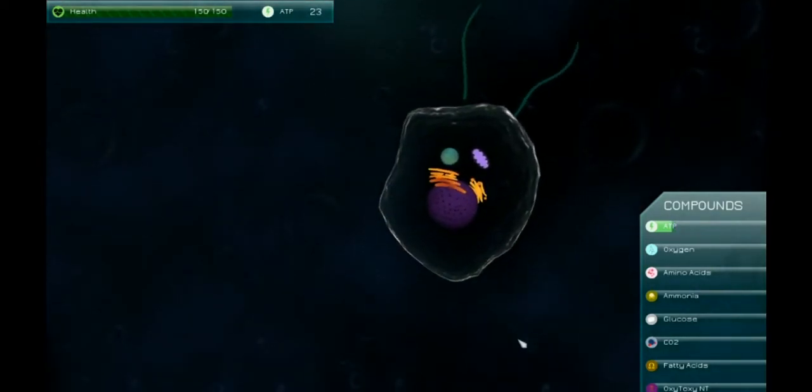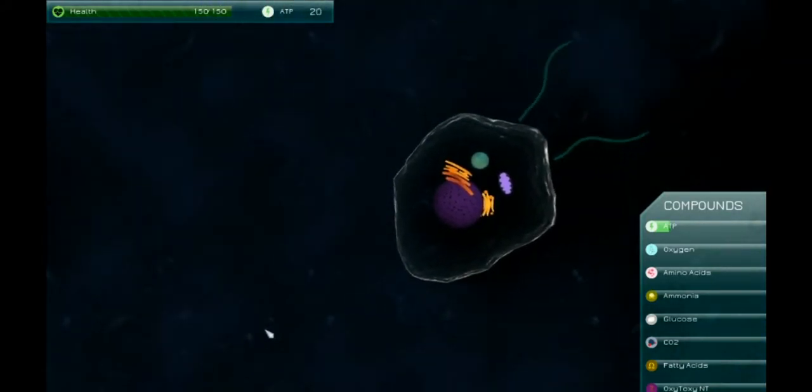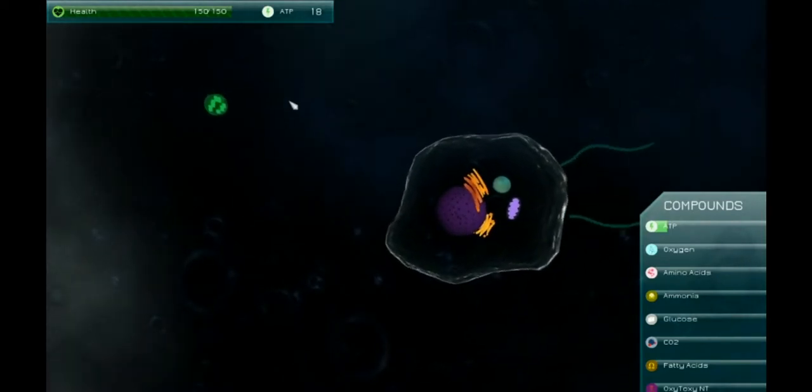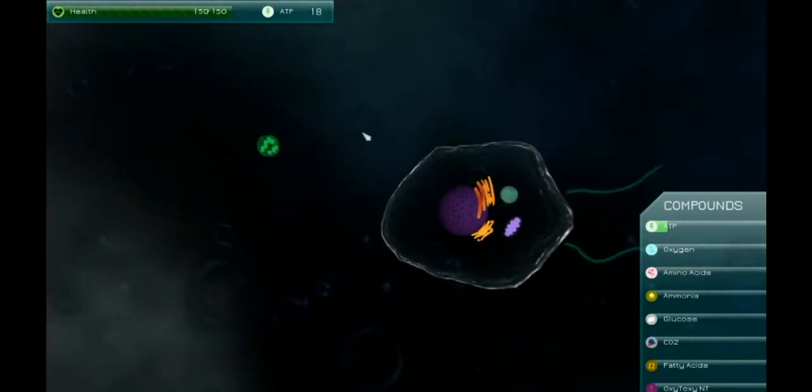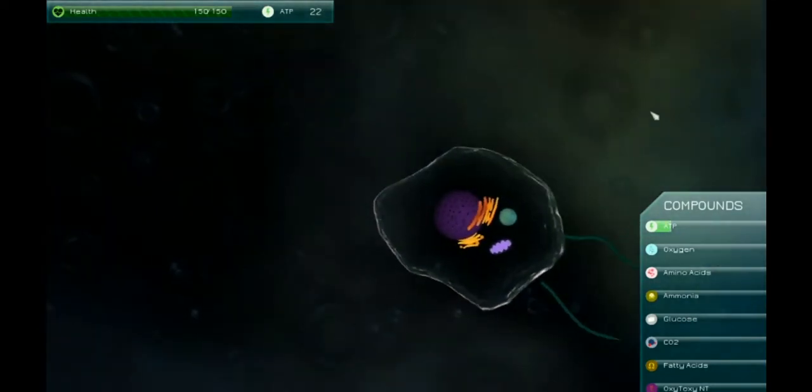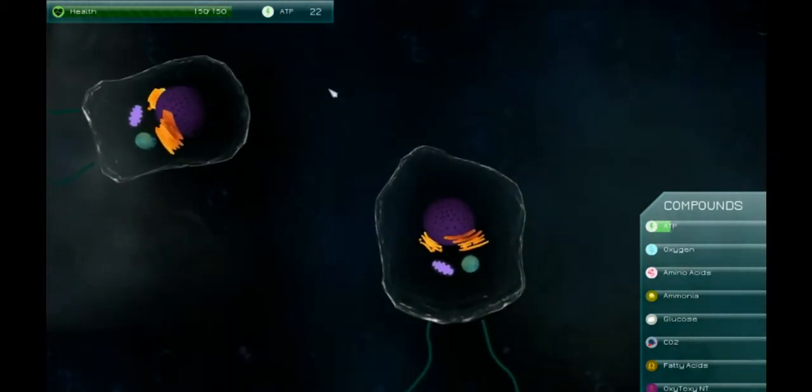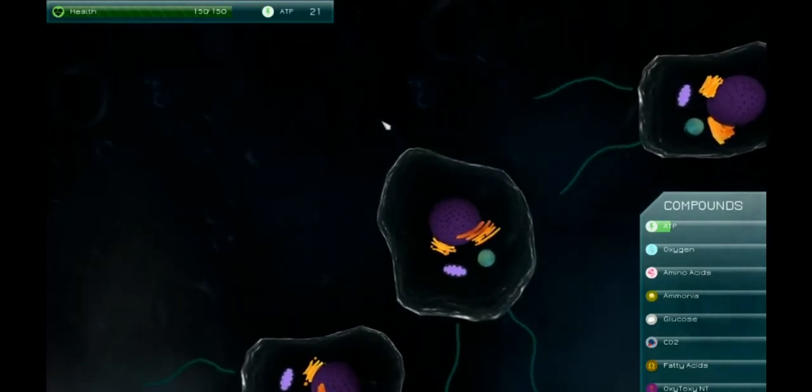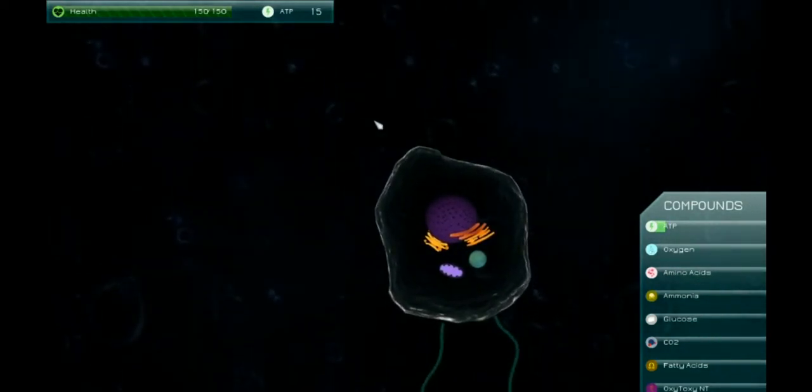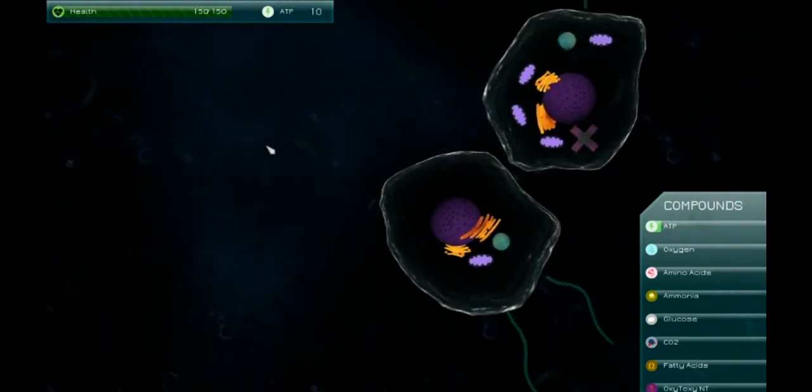I need to find stuff fast, apparently. I look disgusting. What's this? I collected something. Get out of my way. Oh boy. Okay. ATP. Bam. I don't know what I'm collecting, but I'm collecting it.